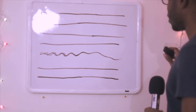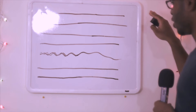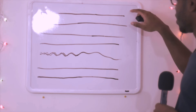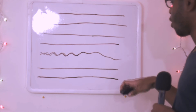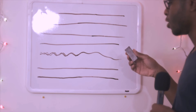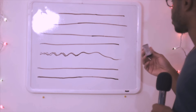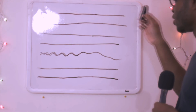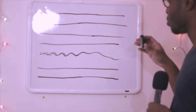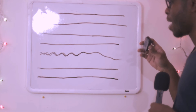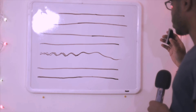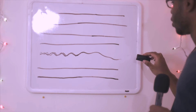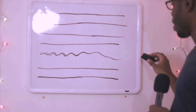Let us imagine this board is your computer, and each of these lines are a thread or a task that your computer has to do. This thing right here is your CPU — this eraser. At any time on your computer, multiple things are happening.